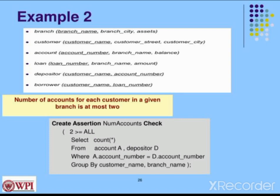The second example uses the same tables and attributes. It checks that the number of accounts for each customer in a given branch is at most 2. One customer has a maximum of 2 accounts. CREATE ASSERTION, assertion name is 'num_accounts', then CHECK with the predicate: 2 greater than or equal to all.